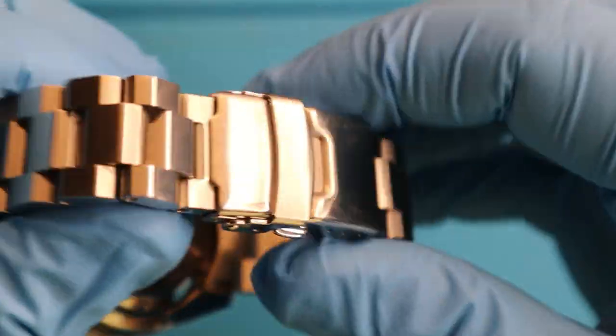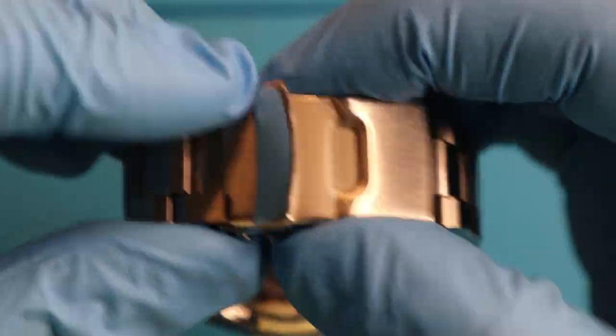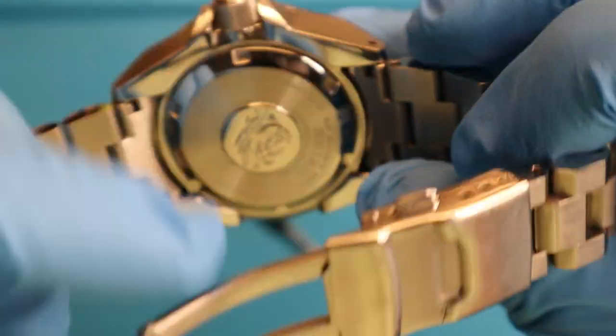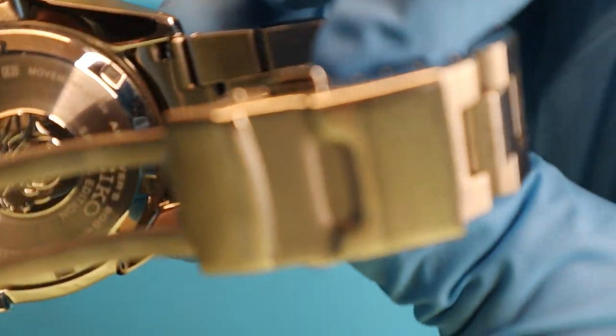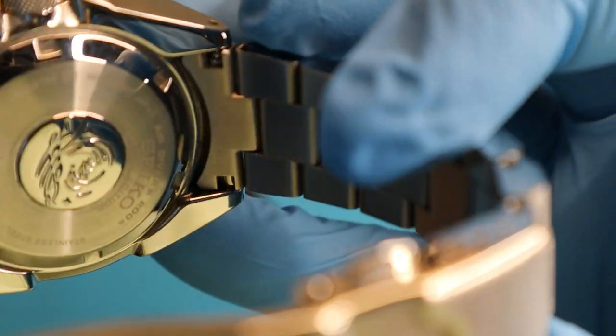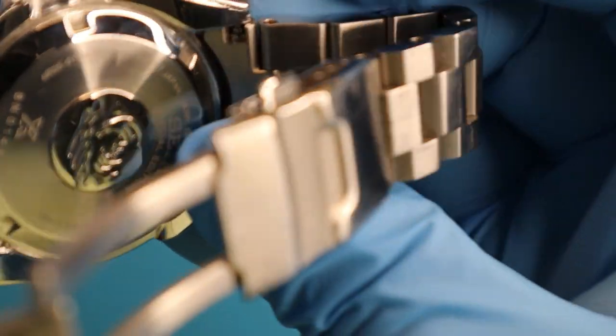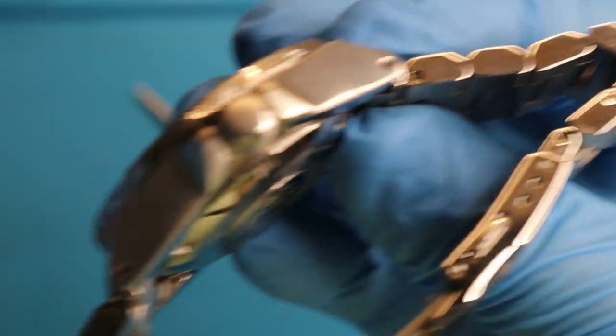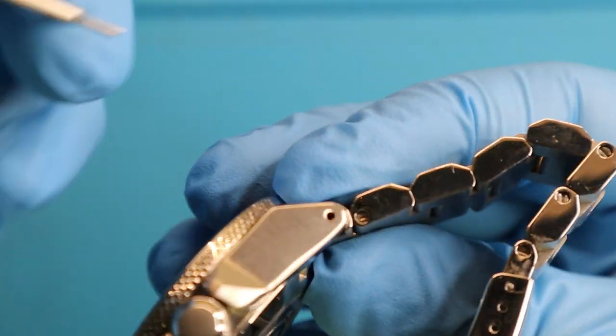The stainless steel band is going to be very similar. We'll go ahead and open the clasp here just to get this out of the way. You can see the same reliefs for the pins, but on this one we've got these nice holes right here.